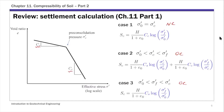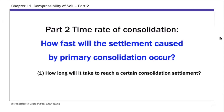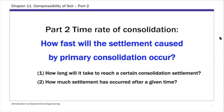Those Sc values from Cases 1, 2, and 3 are final settlements — we haven't talked about how long it takes to reach that settlement. That is the focus of Part 2. The central question we're going to answer is: how fast will the settlement caused by primary consolidation occur? Specifically, we'll address two questions: first, how long will it take to reach a certain degree of consolidation — say 90% or 80%; and second, after a given time, how much settlement has occurred — for example, after five years.